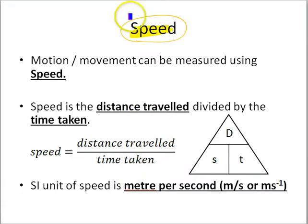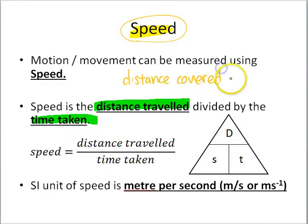In the word speed, we are actually referring to the distance traveled divided by the time taken. So it's actually, in this case here, another word that we can put it is, it is the distance covered per unit time.